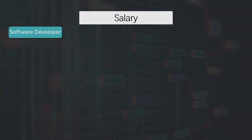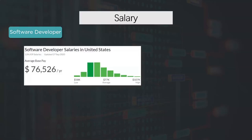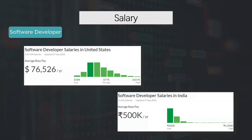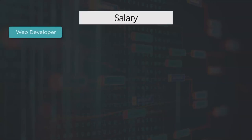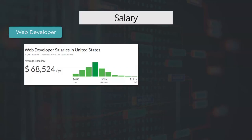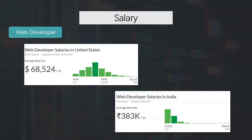Lastly, let's look at job outlook and salaries. Job growth projections for software developers are more optimistic than those for web development roles, and software developers also have higher salaries. The average salary of a software developer in the US is around $76,000 per annum, and in India it's around 5 lakh Indian rupees per annum. For a web developer, the average salary in the US is around $68,000 per annum, and in India it's around 4 lakh Indian rupees per annum.